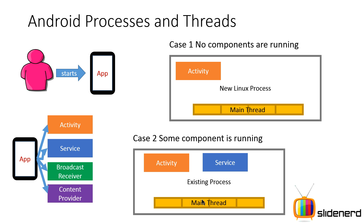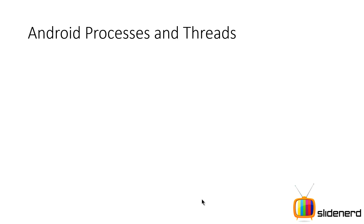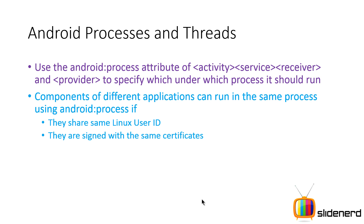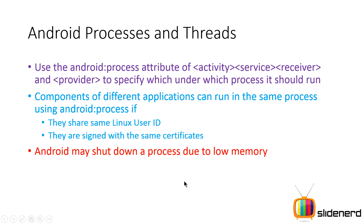You can have an activity, a service, a provider, and a content provider all run in different processes if you want. That can be done with the Android process attribute, but there are certain conditions: first, they should have the same Linux user ID — we'll talk about that later — and they must be signed by the same developer, meaning the same certificates. Those are the two conditions.